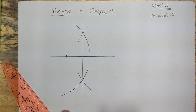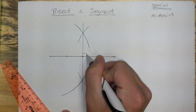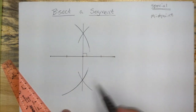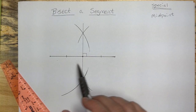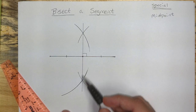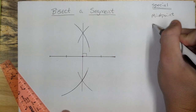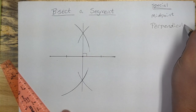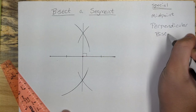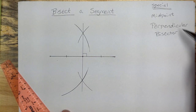One other special feature about this is that this bisect line here is also constructed at a 90 degree angle. So, in this one construction, we've created three different things. We have bisected a segment, which means we've chopped it in half. Because of that, we now have the midpoint. And we also have a perpendicular line. So, this line going through here can actually be a perpendicular bisector. This is a three-in-one, very special construction. And that's how you bisect a segment, create a midpoint, or create a perpendicular bisector. Thank you.